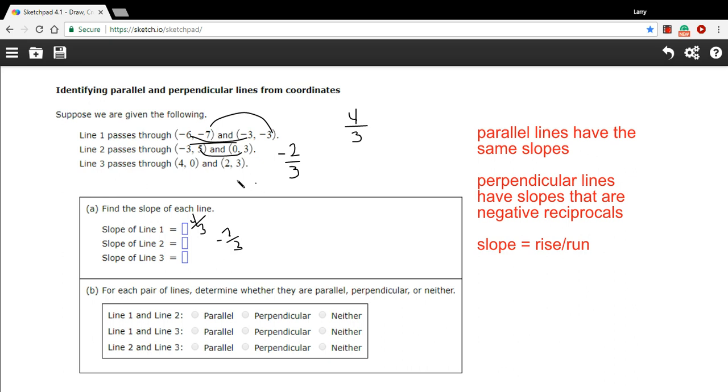And then line 3, the change in the y-coordinates goes from 0 to 3. So that's a positive 3. And change in the x-coordinates is 0 to 2. That's a positive 2. So that's 3 halves.